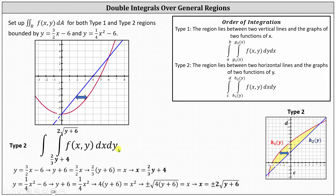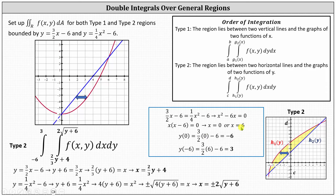Now we integrate vertically with respect to y. The y-coordinate of the lowest point is negative 6, and the y-coordinate of the highest point is positive 3, so the limits of integration for y are from negative 6 to 3. To find these y-values algebraically, we use x equals 0 and x equals 6 from type 1 — the x-coordinates of the points of intersection — and substitute into either function. Using the linear function gives y equals negative 6 and y equals 3.